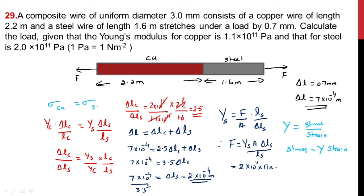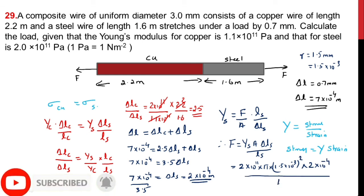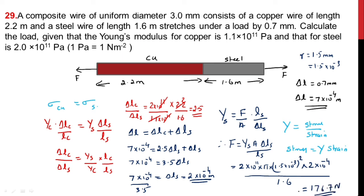Area = π × (1.5×10⁻³)², since diameter is 3 mm so radius R = 1.5 mm = 1.5×10⁻³ m. With δLs = 2×10⁻⁴ m and Ls = 1.6 m, calculating gives F ≈ 176.7 Newton. I hope you understood this. Thank you all.